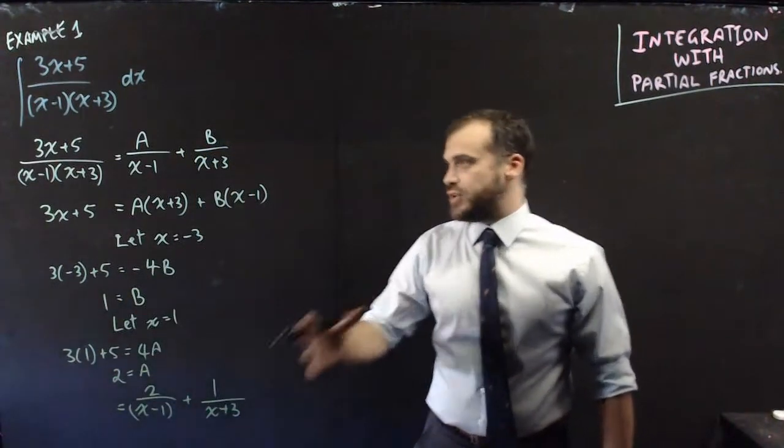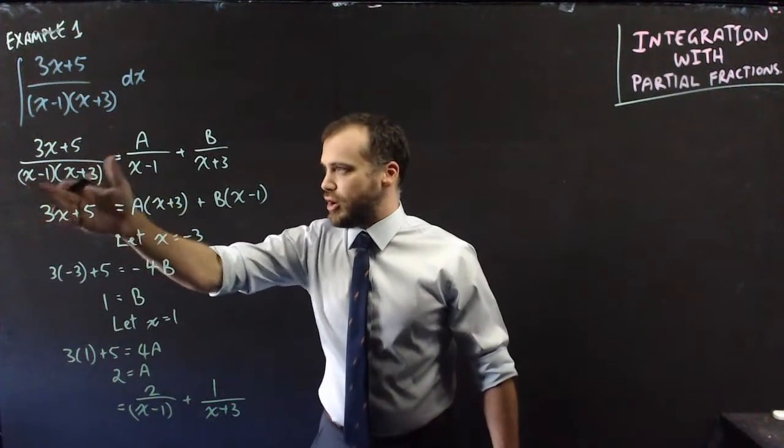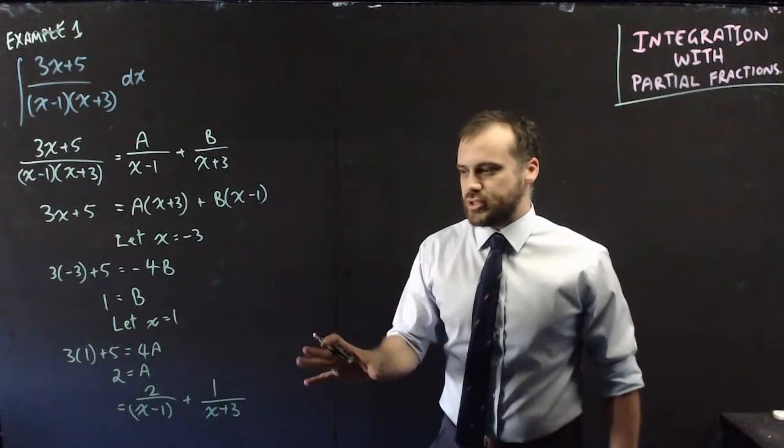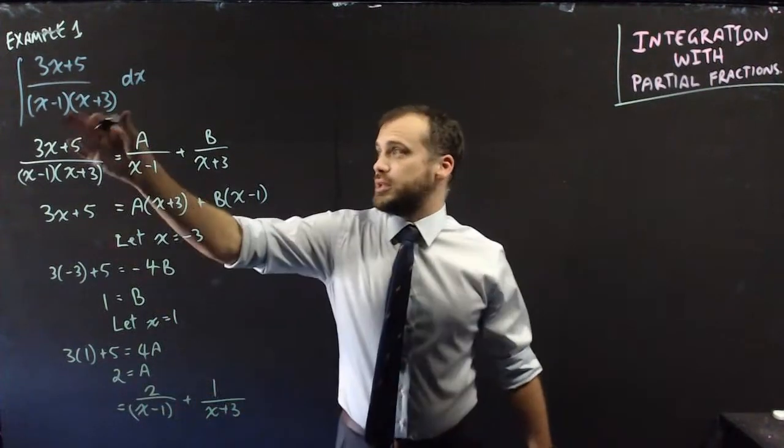There we have it. We've finished this. 3x plus 5 over all of that is equal to 2 over x minus 1 plus 1 over x plus 3. And now that we know that, we can integrate this.